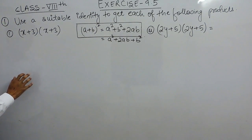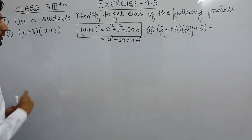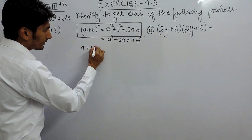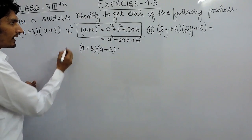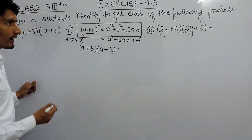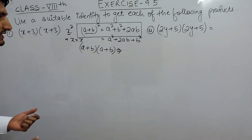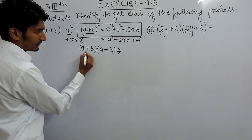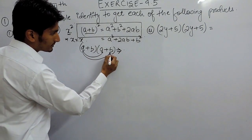Now let me explain how this identity is formed and how it makes it easy to solve these kinds of questions. (a + b) whole square means the same term is multiplied twice — just like x square means x multiplied by x. So (a + b) whole square means (a + b) multiplied with (a + b). To multiply two terms with two terms, we multiply each term with both terms on the other side.